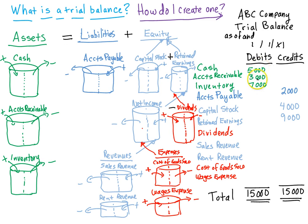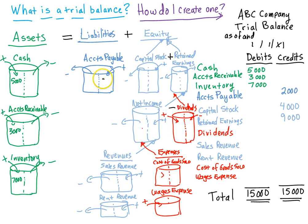Now I'm going to take these balances and place them into the ledger accounts. If it's a debit balance, I put it on the left-hand side of the account; if it's a credit balance, I put it on the right. Cash starts with $5,000, receivables $3,000, inventory $7,000. Accounts payable: we begin the period owing $2,000 to our suppliers. Capital stock contributed by owners is $4,000, and retained earnings — all income retained so far — is $9,000. These are called general ledger accounts.